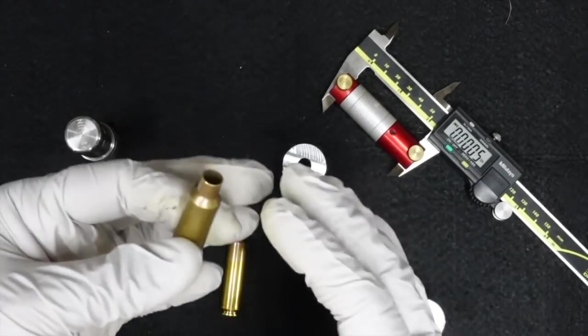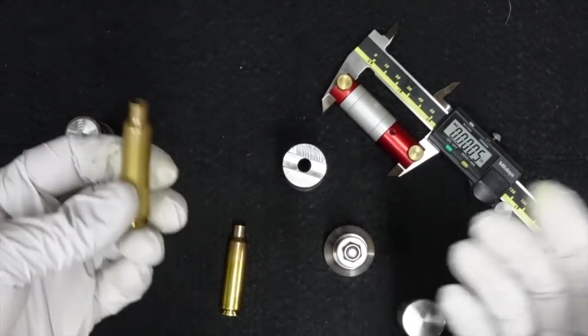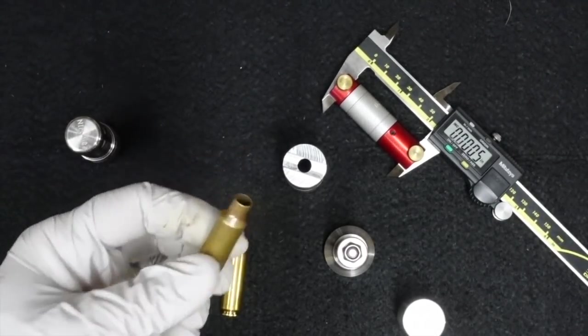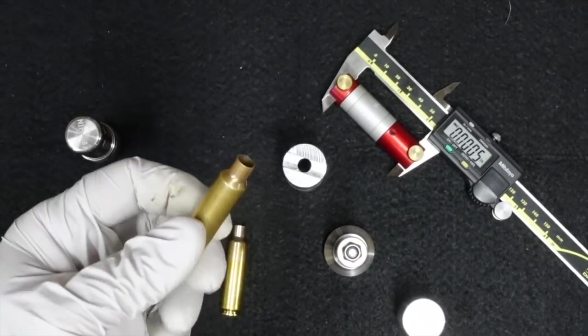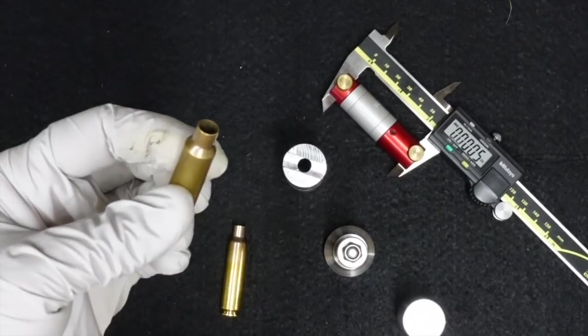General acceptance is about half a thousandth to two thousandths on most calibers. There could be reasons you'd be a little bit less or a little bit more, but as a general rule, half to two thousandths is probably where you're going to want your shoulder bump to be.